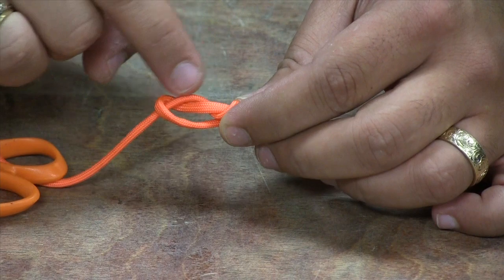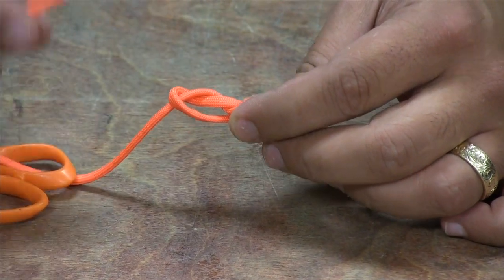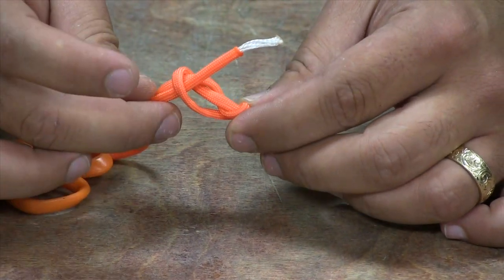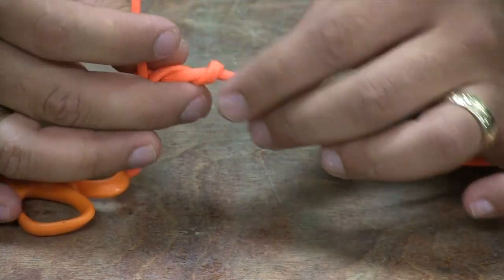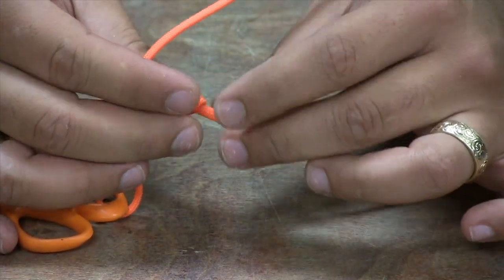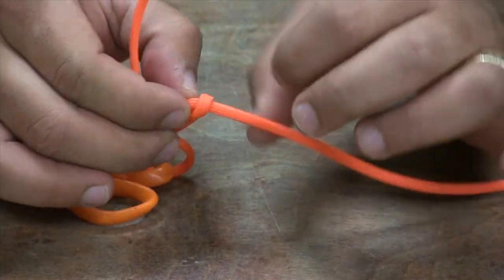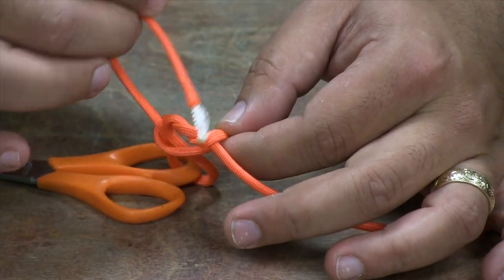This line right here is coming out of this loop so you're going to want to follow it in the same direction. And the line here, the main line is going through the loop this way. You're going to want to follow it the same direction. So we're going to go this way.